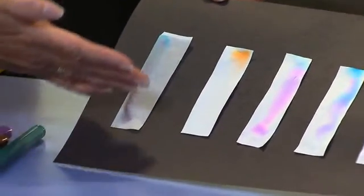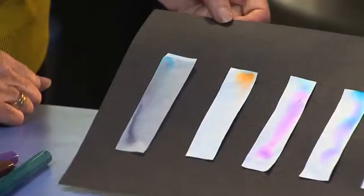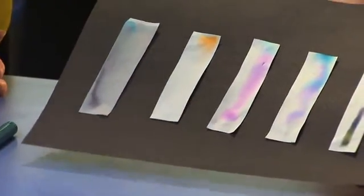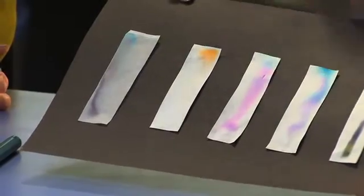As the water moves across, it sort of drops off the different colors at different rates. Look at this one. This is orange. It's got a tiny bit of yellow at the top. But not much, really.